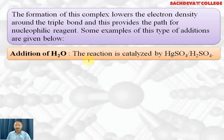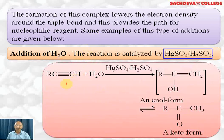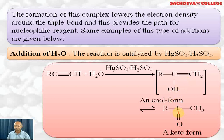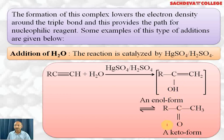First, we consider the addition of water to a terminal alkyne, catalyzed by mercuric sulfate and dilute sulfuric acid. Water breaks into H⁺ and OH⁻. According to Markovnikov's rule, OH⁻ attacks the middle carbon and H⁺ adds to the terminal carbon, giving an intermediate called the enol form — a structure with a double bond and an OH group. This enol form rearranges: the H shifts and the double bond shifts, giving a keto group. This is the keto form. The interconversion of enol and keto forms is called keto-enol tautomerism. The keto form is more stable, so the enol form converts to it.